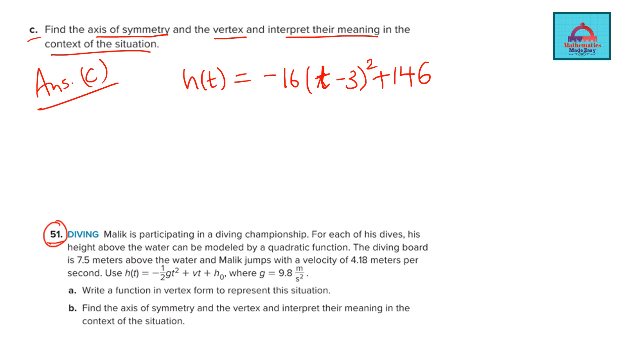So remember, the axis of symmetry comes from the square term. So what is inside the square? Let's see. Axis of symmetry is given by this term, which is inside the square. So it is given by t minus 3. Just put it equal to 0. So t equal to 3. This is the equation of axis of symmetry. That completes one part.